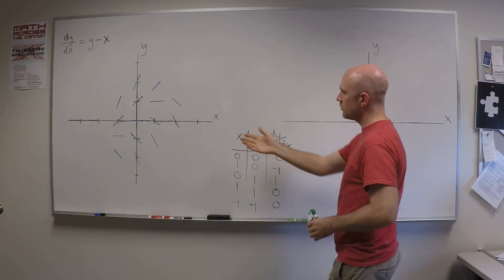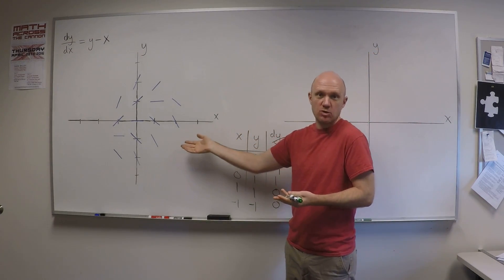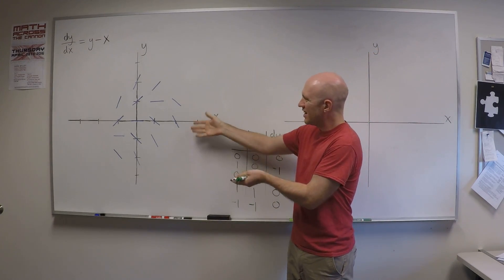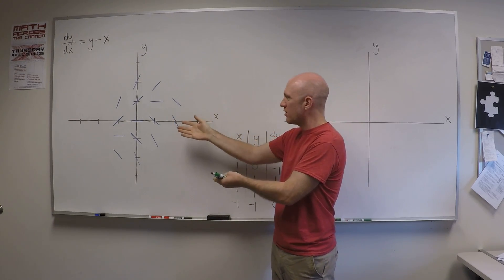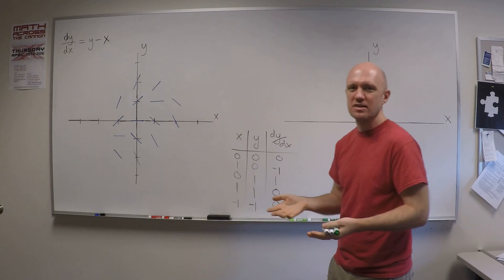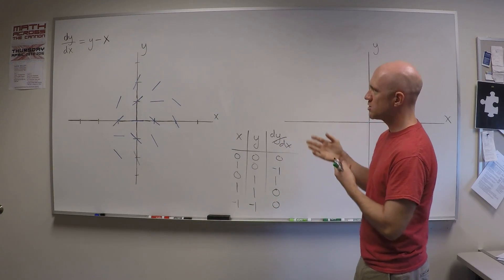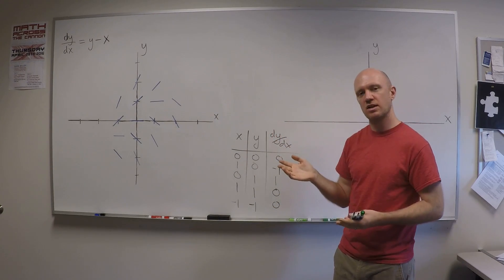Okay, so I went ahead and filled in a few more slope values so you didn't have to watch me do it. But you can see it takes a while. I had to pick a bunch of points and compute the slope and fill it in. It's kind of tedious. Maybe not the smartest way to do it. Now, a smarter way to do this is using what's called an isocline.